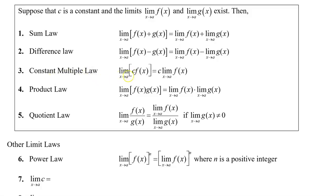The constant multiple law says that if we're looking for the limit of a constant multiplied by a function, we can find the limit of that function first and then multiply by the constant. In the product law, if we're looking for the limit of two functions being multiplied, we can find the limit of each function separately and then multiply the results. Similarly, the quotient law says if we're finding the limit of a quotient, we can find the limit of each function separately and divide the results, as long as the limit of g of x doesn't equal zero.